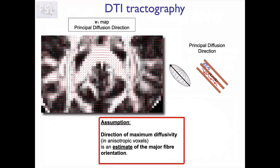We already saw briefly a technique for how to do this, because when we looked in the previous lectures at the diffusion tensor, one of the things we obtained was the principal diffusion direction, which is the first eigenvector of the diffusion tensor. Because water diffuses more freely along axons than perpendicular to them, this principal diffusion direction is an estimate of the major fiber orientation within each voxel. We can use this to start in some voxels and keep following this estimate of the local fiber orientation, giving us a line through the brain called a streamline, which is a reconstruction of a white matter bundle.